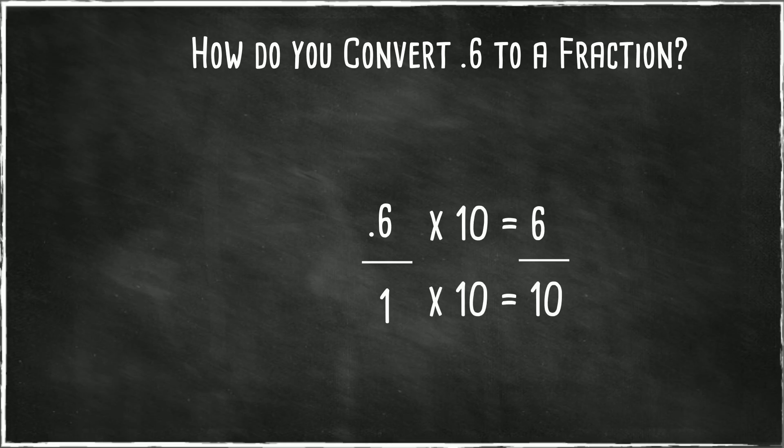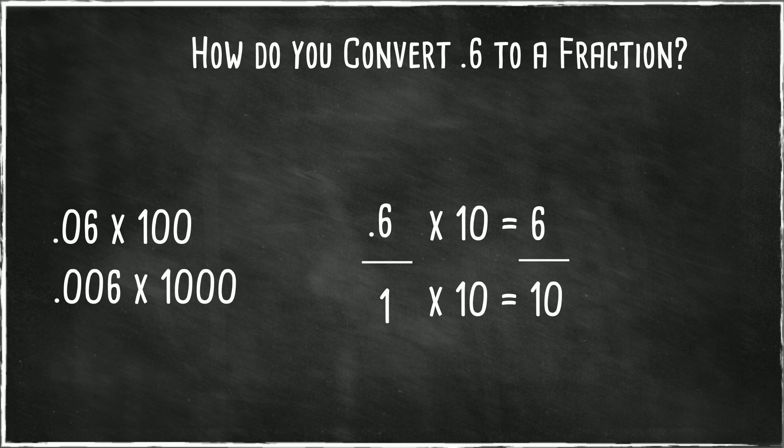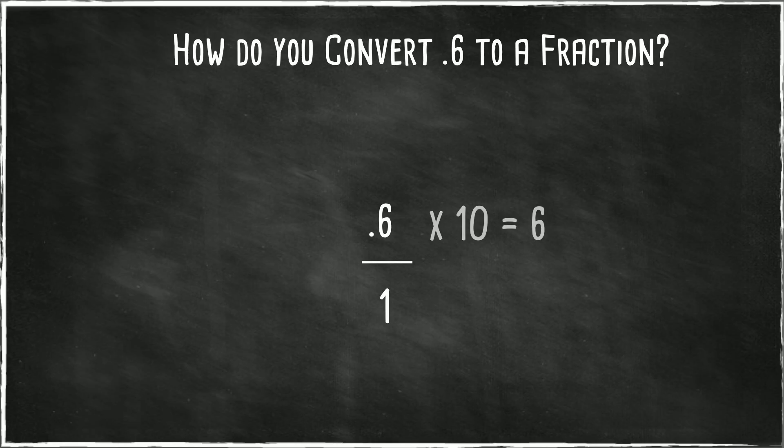If you have two digits multiply by one hundred, three digits by one thousand, four digits by ten thousand. Okay, so now six tenths times ten is six. One times ten is ten.